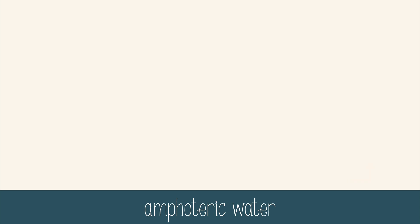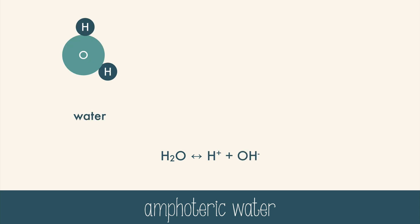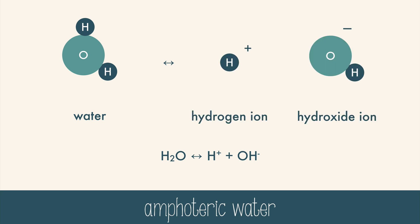Water is incredibly special for many reasons, and one of those is that it's amphoteric — it's able to act as both an acid and a base. If you break off one of the hydrogen atoms, you get a hydrogen ion and a hydroxide ion. The hydrogen ion would imply that water is an acid, and the hydroxide would imply that water is a base. And the truth is, it's both. Amphoteric. Pretty amazing.